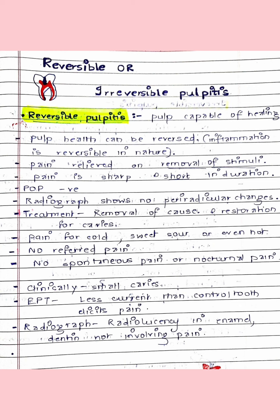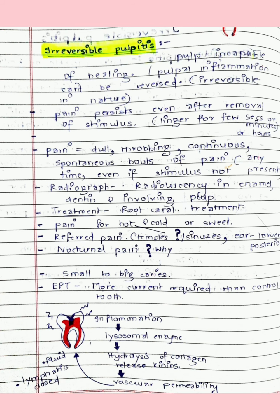Irreversible pulpitis means the pulp has deteriorated and is incapable of healing — that is why root canal treatment is done in such cases. The pain persists even after removal of stimulus; for example, a person was having tea, had pain, and even after stopping, the pain persisted for a few minutes or even hours. The pain is dull and throbbing because A-delta fibers have degenerated in chronic cases, leaving only C fibers — making the pain dull, throbbing, continuous, and diffuse, not easy to localize.